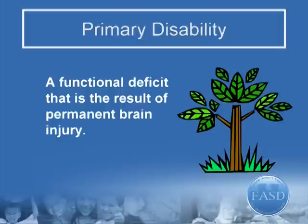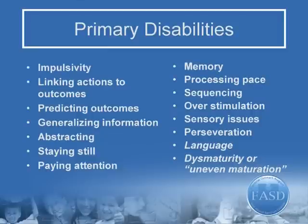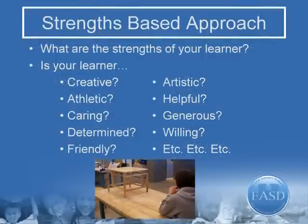If we can't see the brain, how might we know that there is underlying neurological damage caused by alcohol? We see behaviors that reflect the underlying brain differences. Dr. Anne Streisguth calls these primary disabilities — behaviors that are the result of a permanent injury to the brain. A primary disability affects how a student learns. This list includes many of the primary disabilities. In addition, the student with FASD may have physical and medical concerns. However, the student will have many strengths.